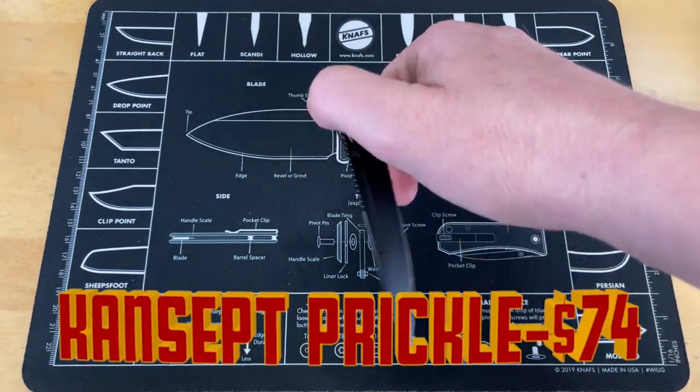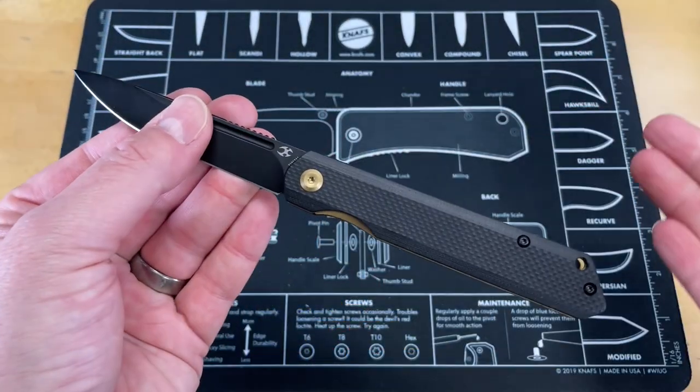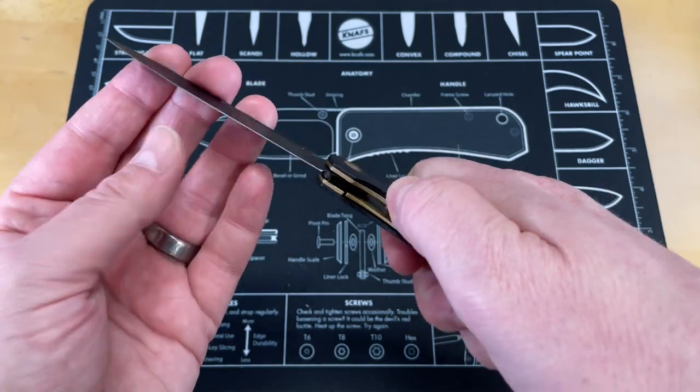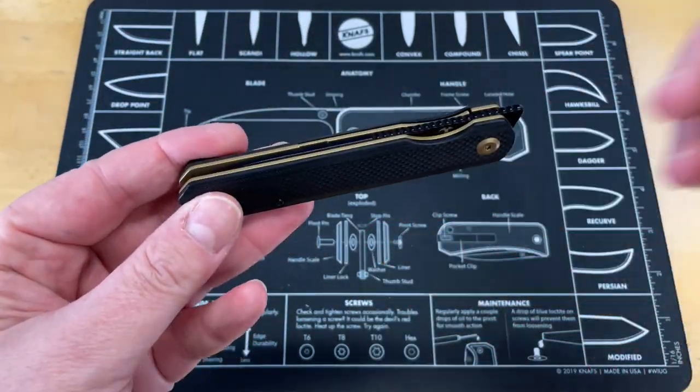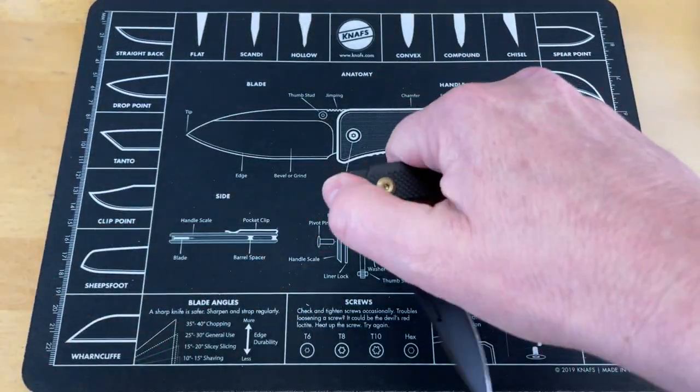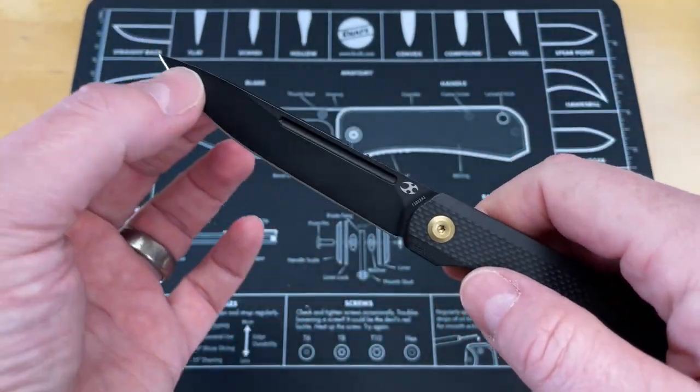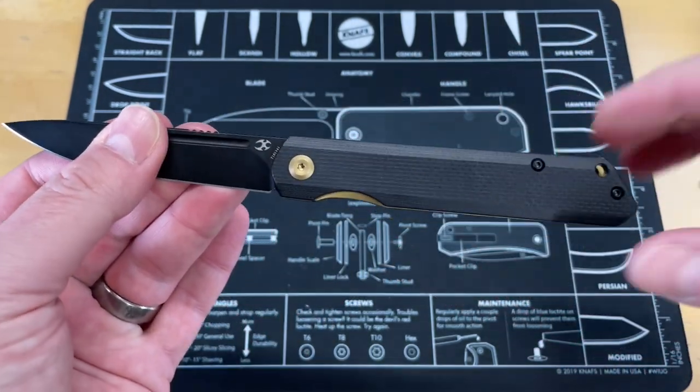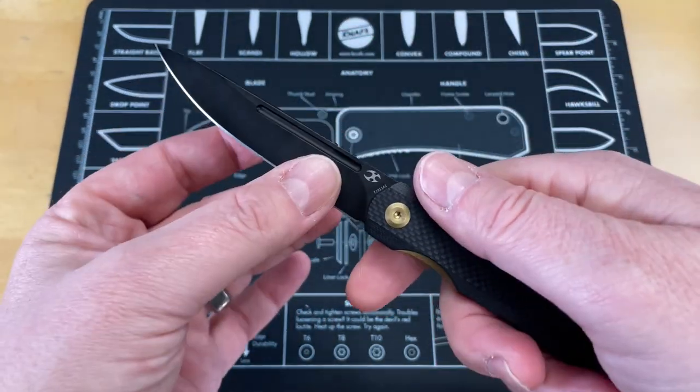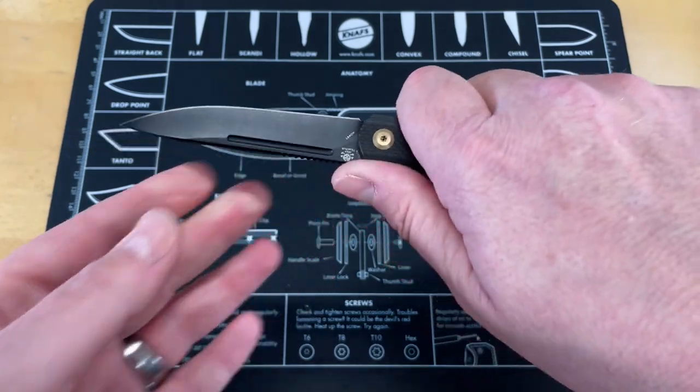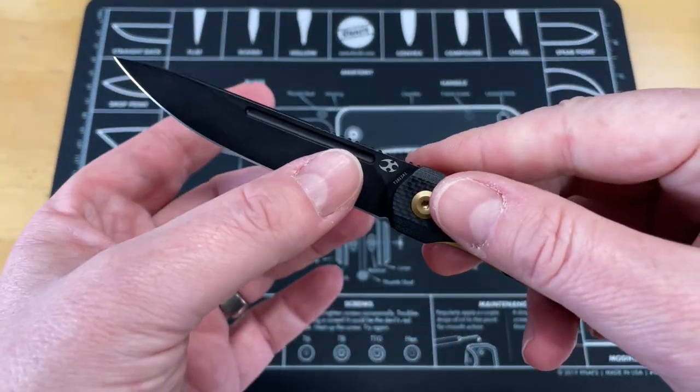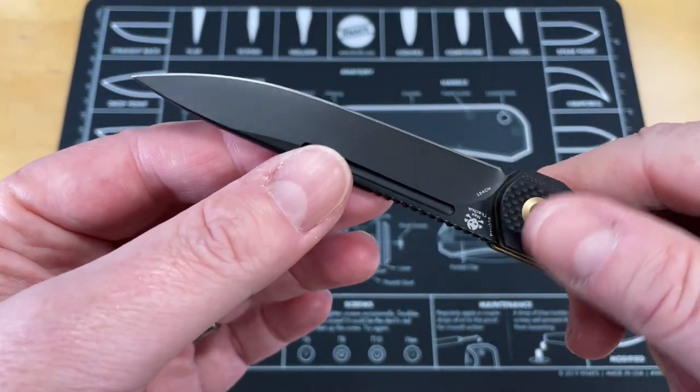You're going to recognize this one. This is my Kansept Prickle. It's made several appearances in some of these videos because it is such a good knife. Not only is it aesthetically pleasing, it is very attractive with the black and copper, but it's also a very good functional blade. For such a thin narrow blade knife, it carries really well.